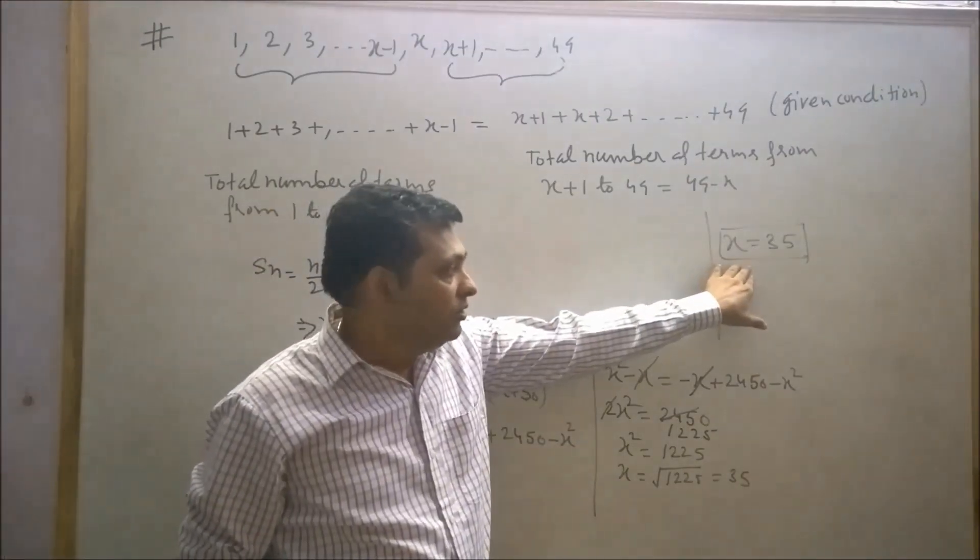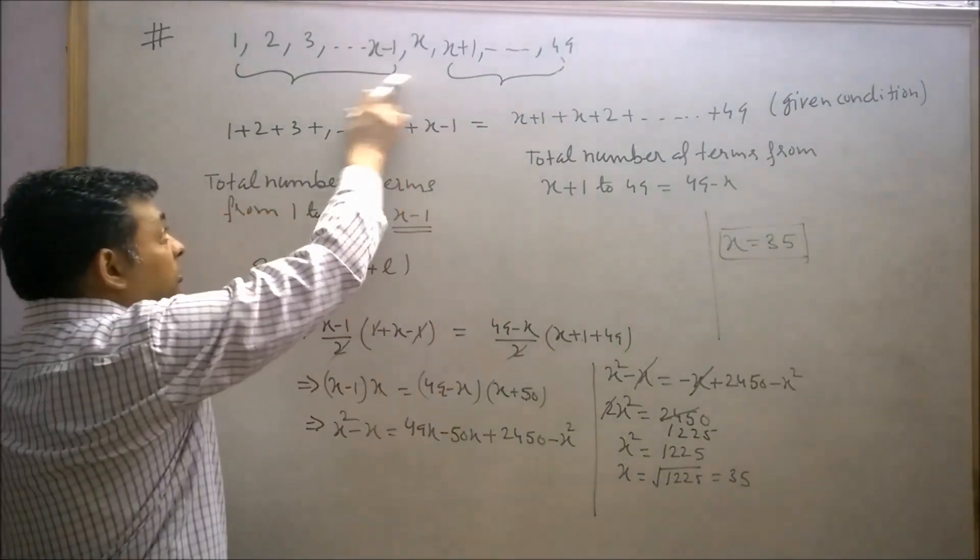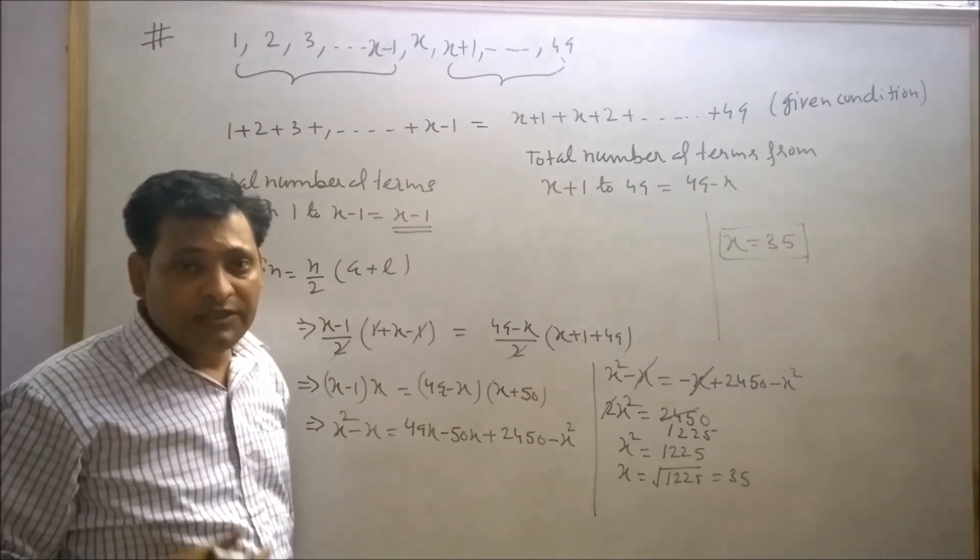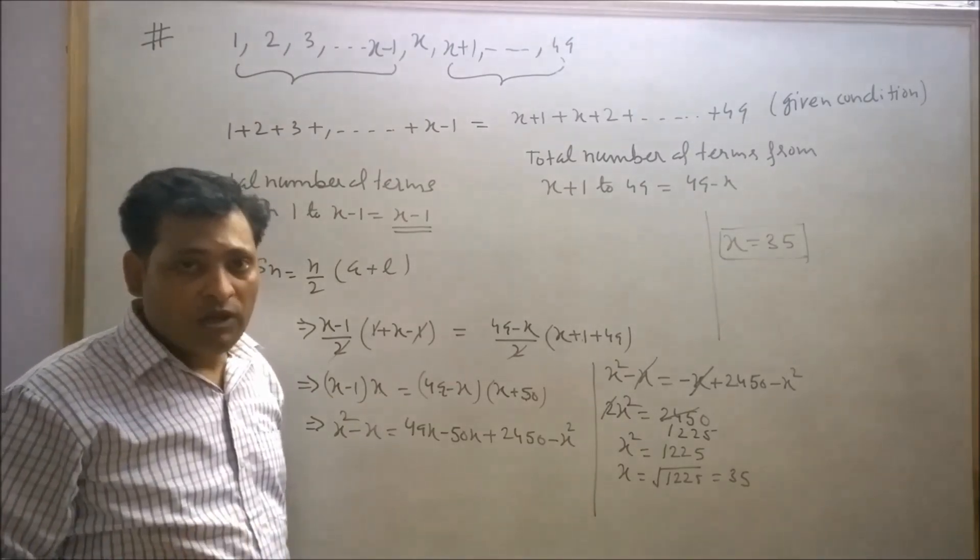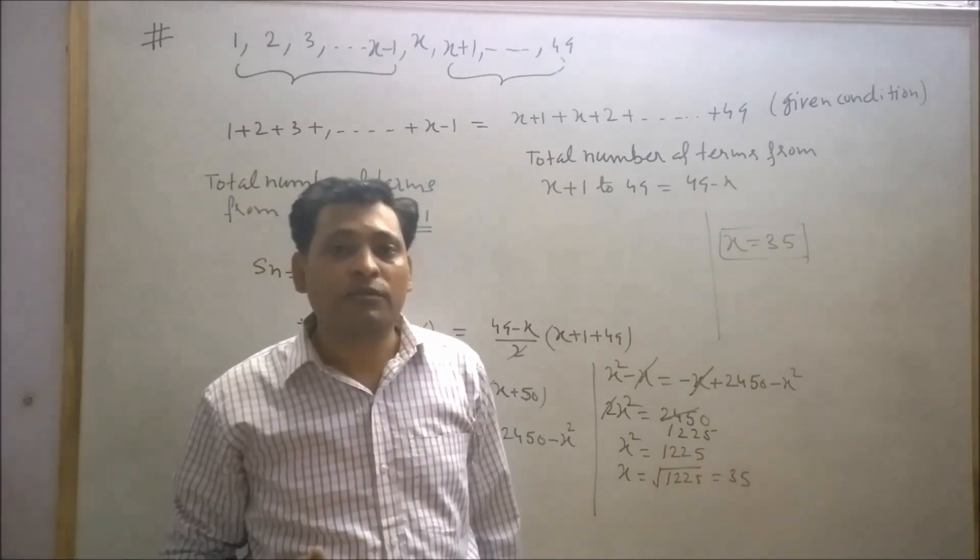So students, we have found that house number 35 is the house such that the sum of the number of the houses preceding it equals the sum of those following it. So keep watching my videos and keep practicing. Thank you. Take care.